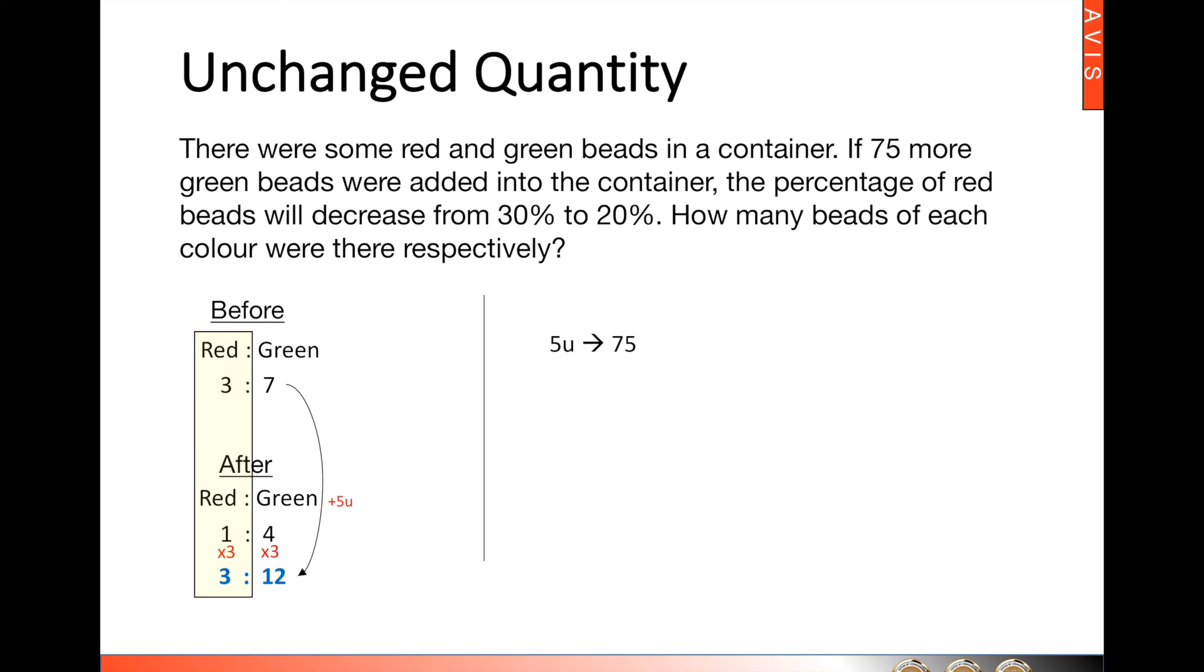From there, we can find what 1 unit is and can find how many beads of each color were there respectively. Now, which ratio should we take? Should we take the before or after? Well, we should take the before because these 75 green beads were not really added. It's only an if. So the green beads remains at 7 and the red beads still 3 units. There we get different number of beads respectively.